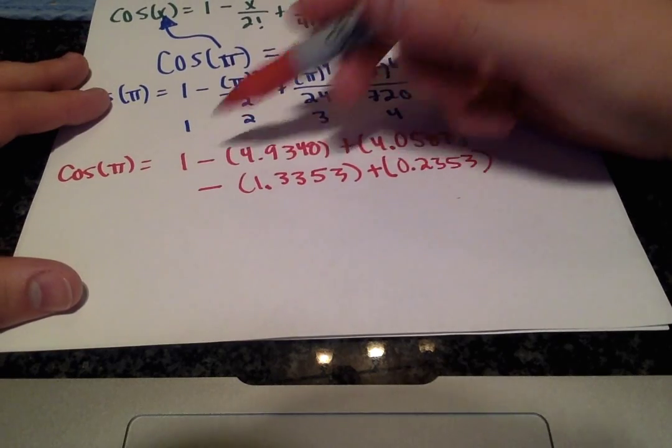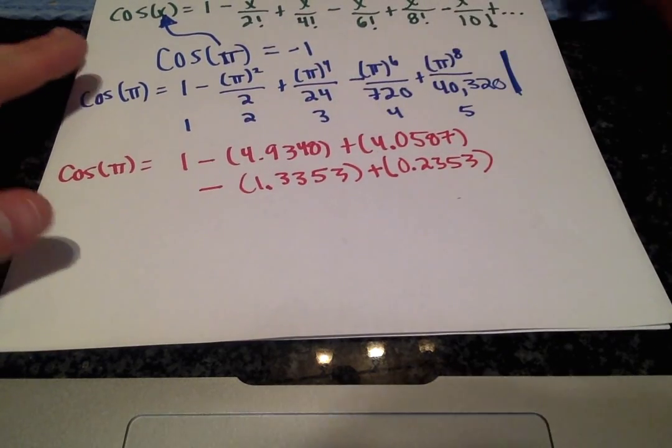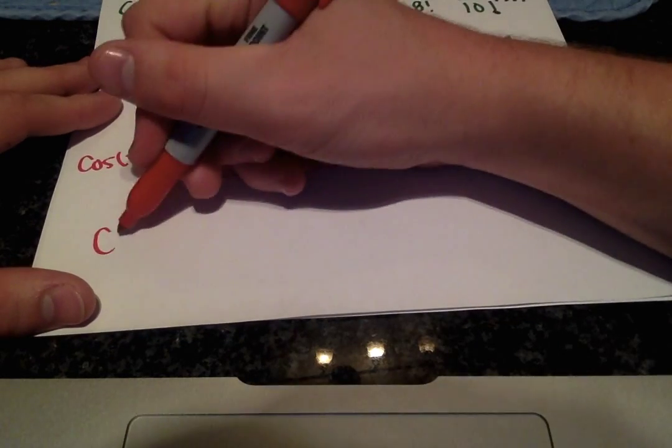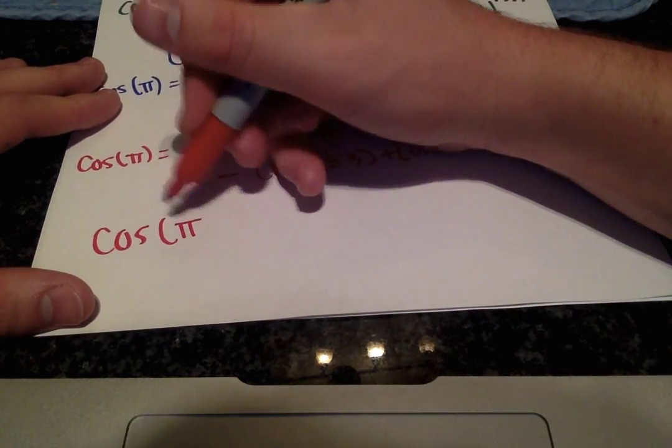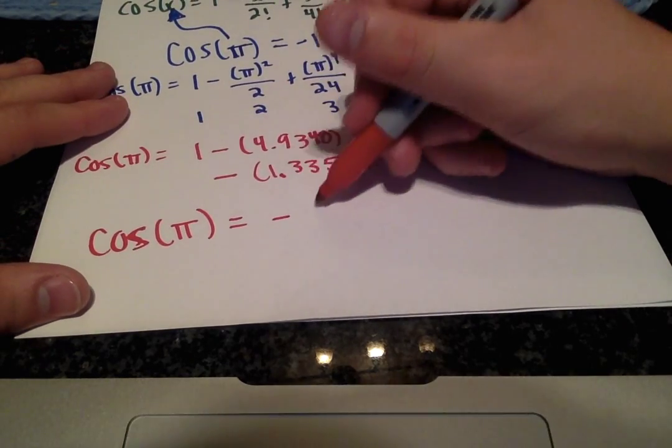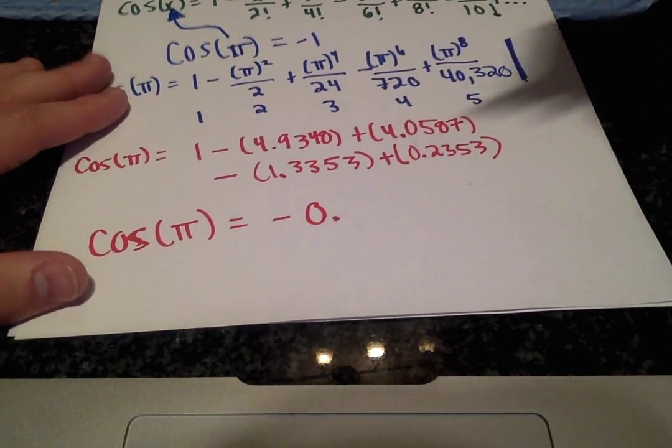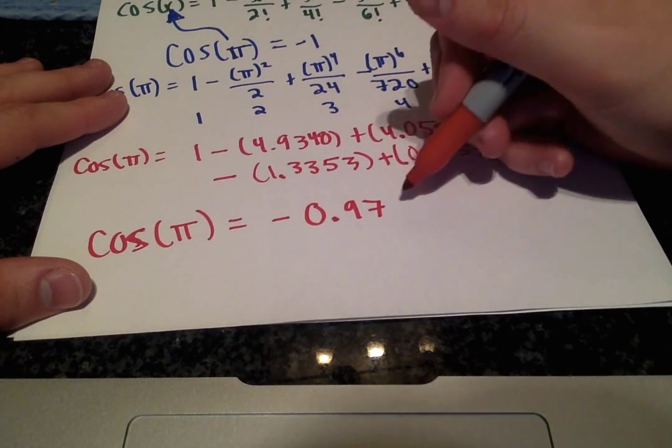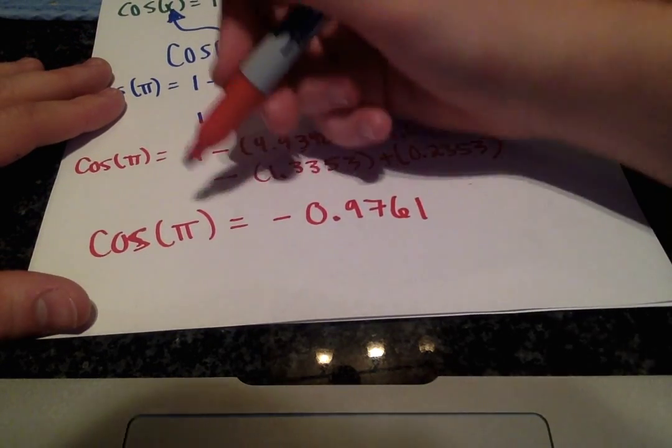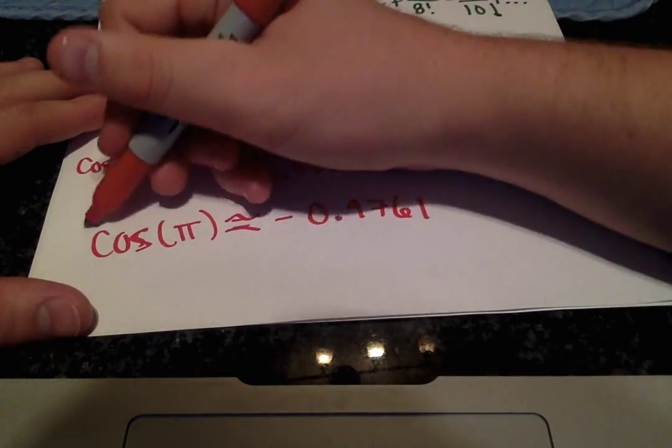So, notice each term has four decimal places, and now we can approximate our final answer. Cosine of π with four decimal places, and I get negative 0.9761 for our approximation.